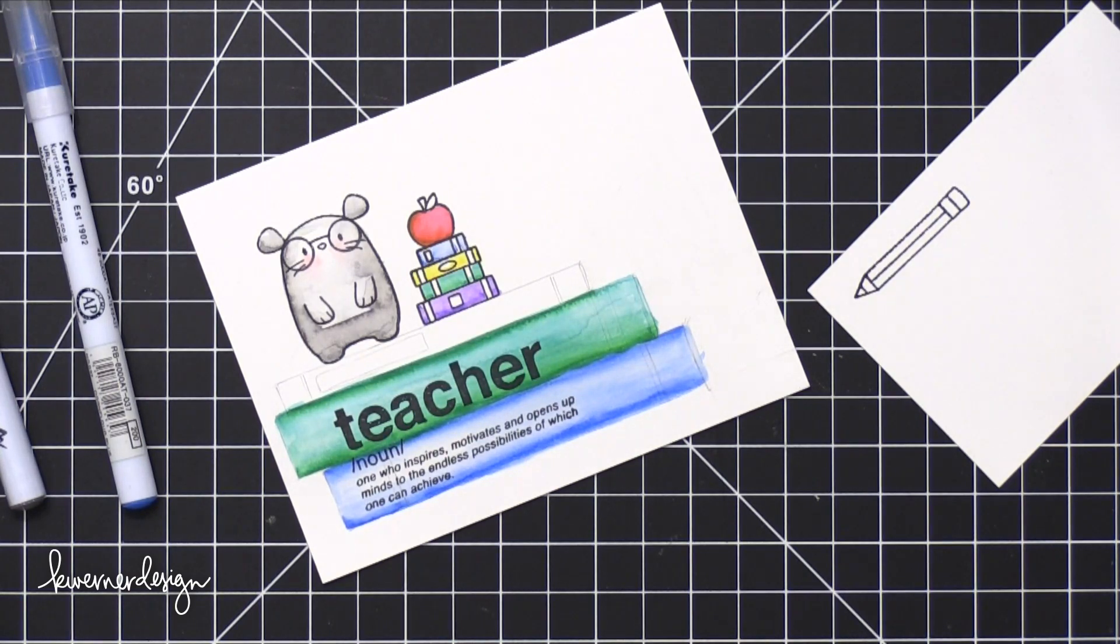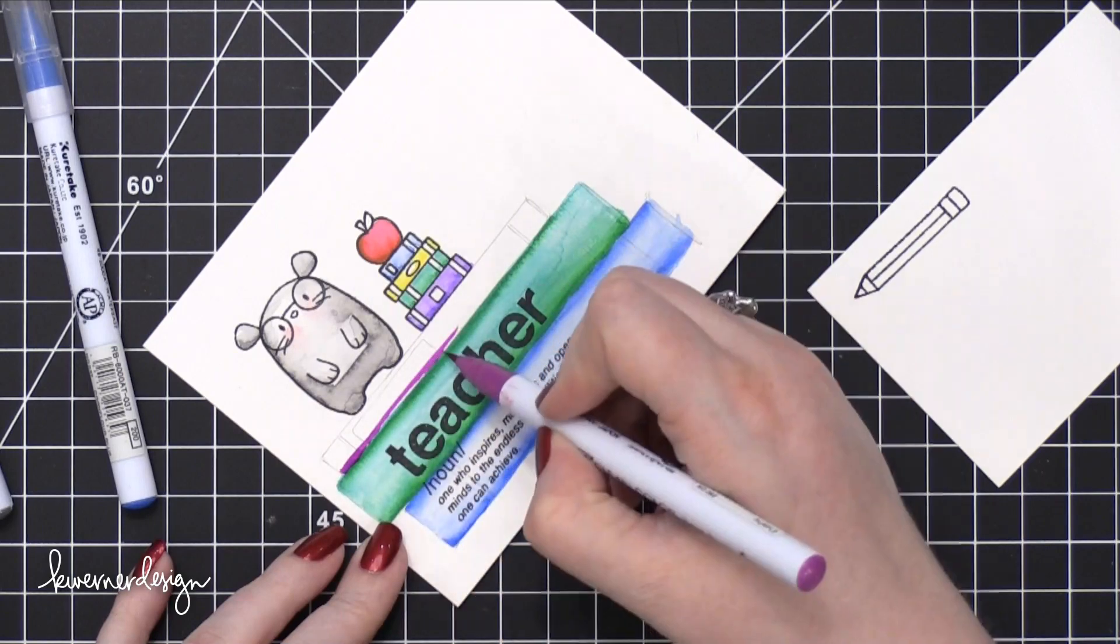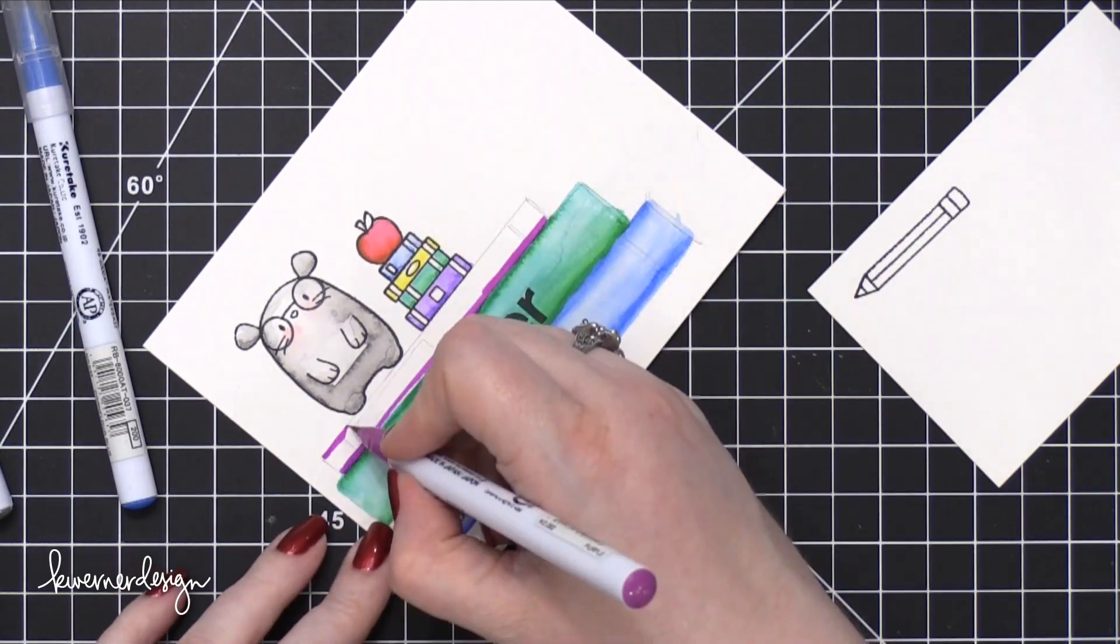But then I decided I would go ahead and just change the shade of purple. And I'm going to use a purple that's a little bit more on the pink or red side. So that's the color I'm using on the top stack of the books.